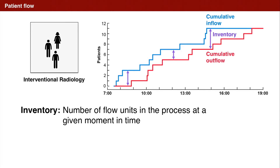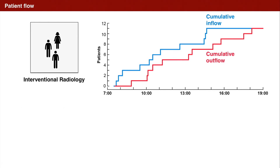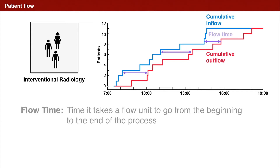I know this sounds really disrespectful to our patients, but that's just the word. Inventory is the number of patients in the process. Finally, we can also see how long each patient spent in the process. Some patients spent a long time, as did patient 9 for example. Others get in and out much faster — like patient 5, who was in and out in 15 minutes. We call this number the flow time.